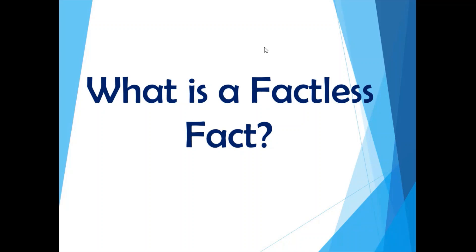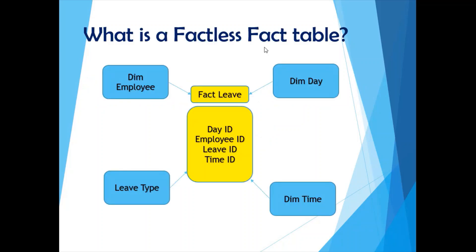The second question is: what is a factless fact table? Consider an example with a dim employee table, a dim day table, a time table, and a leaf type table. The fact leaf table tracks how many leaves were taken by which employee, when the leave was taken, and what type it was — vacation, sick day, or holiday. If you look at the structure of the fact table, you'll see it only has primary keys from other dimension tables as foreign keys: day ID, employee ID, leave ID, and time ID — but no measure column, because you are not measuring anything.